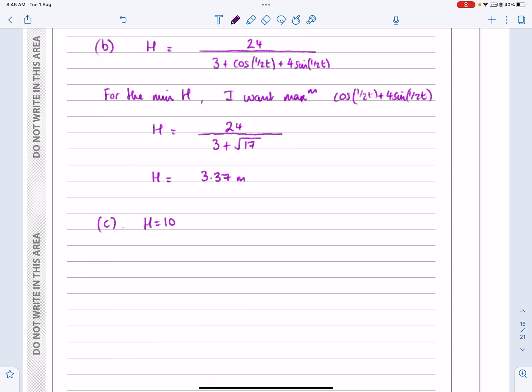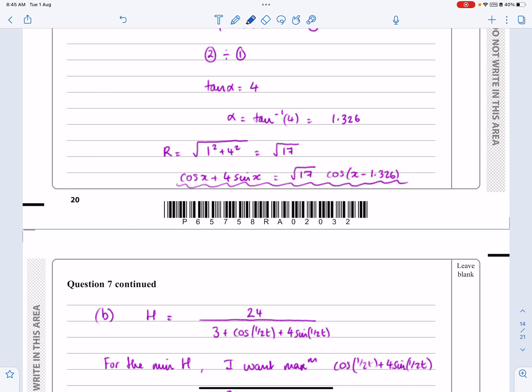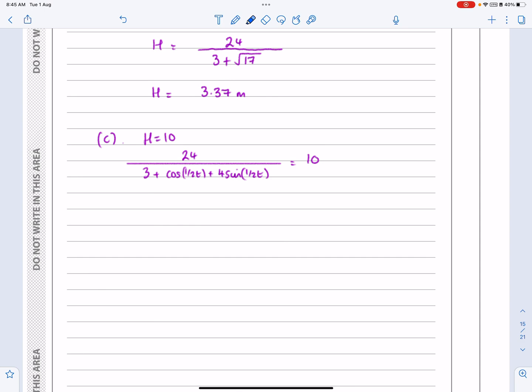So, if they're saying H is equal to 10, then they're saying 24 all over 3 plus cos half T plus 4 sine a half T is equal to 10. Now, at some stage, I'm going to swap this out for this business here. It's up to you when you do that. You could do that straight away and work with it. I'm probably just going to tidy it up a little bit first. So, what I'm going to do is take this up to this side first of all, and actually I'm going to take the 10 down at the same stage. You can take as many steps as you want to do this.